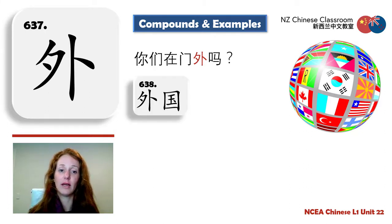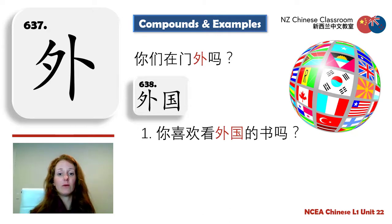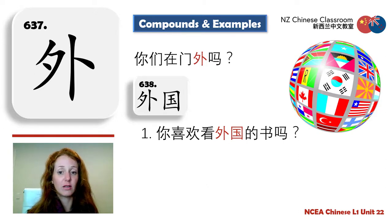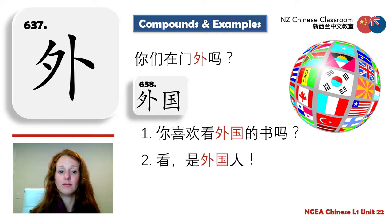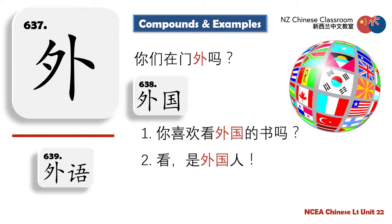外国 — foreign country, literally outside one's own country. Example: 你喜欢看外国的书吗? — Do you like reading books from a foreign country? 外国人 — a foreigner. If you've been to China, kids might point and say 外国人! And 外语 — foreign language. Example: 他不说英语，说外语 — He doesn't speak English; he speaks a foreign language.